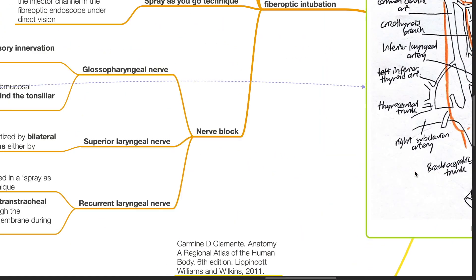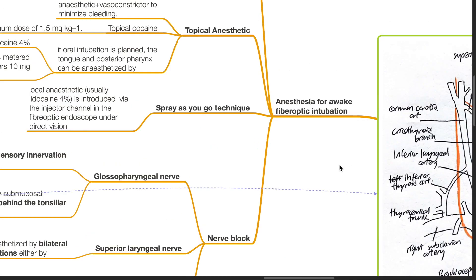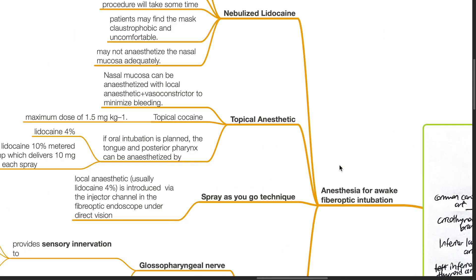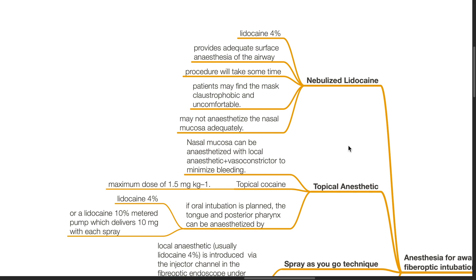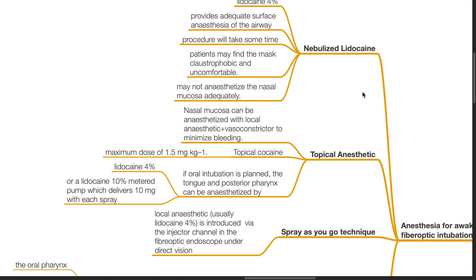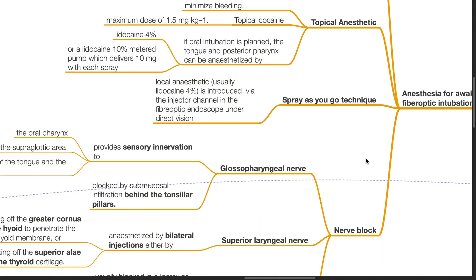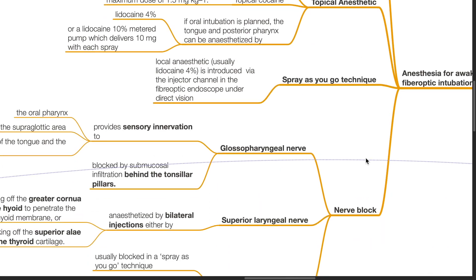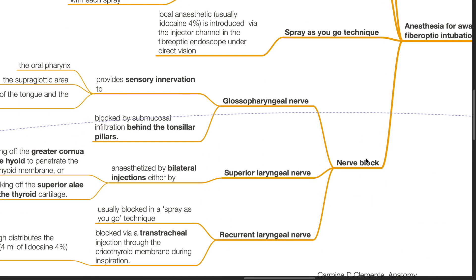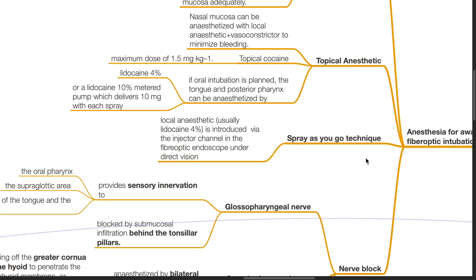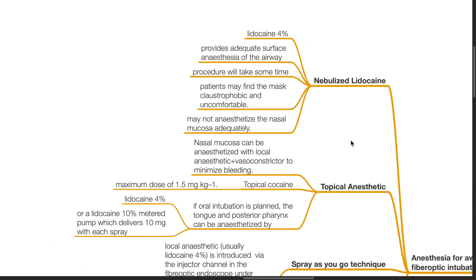Anesthesia for awake fiber optic intubation: there are a few methods available — nebulized lidocaine, topical anesthetic, spray-as-you-go technique, and nerve blocks. Nebulized lidocaine using lidocaine 4% provides adequate surface anesthesia of the airway.